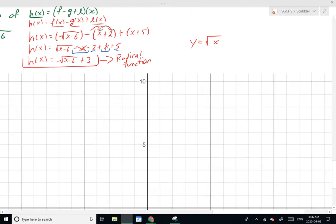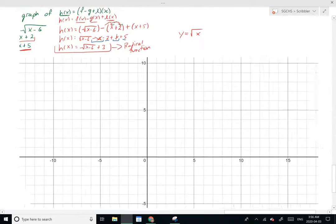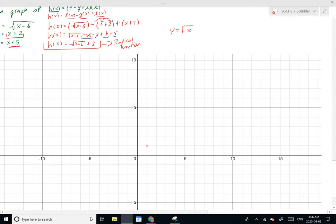Because remember, if we go from our base √x function, which looks something like this, so when x equals 4, y equals 2, x equals 9, so on and so forth. So our base function, y equals √x, looks something like this.